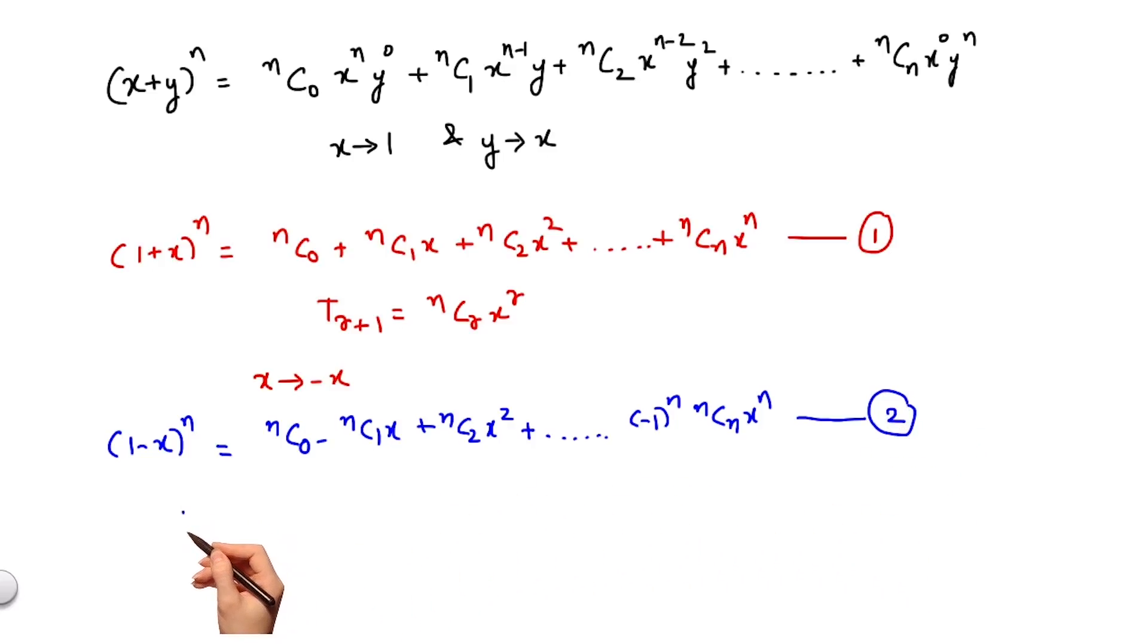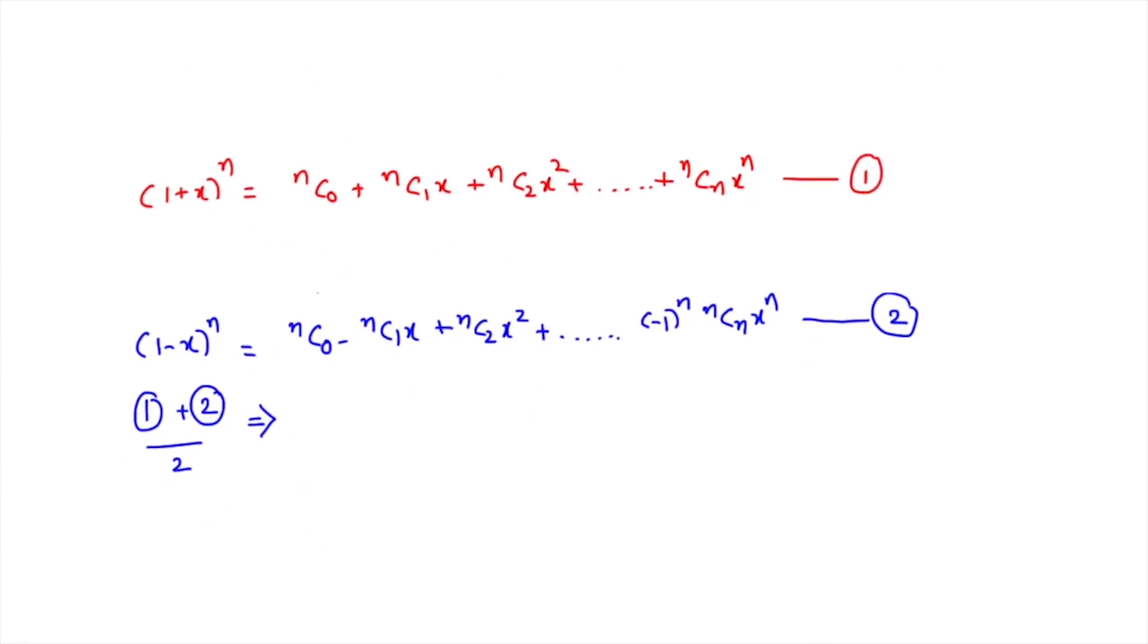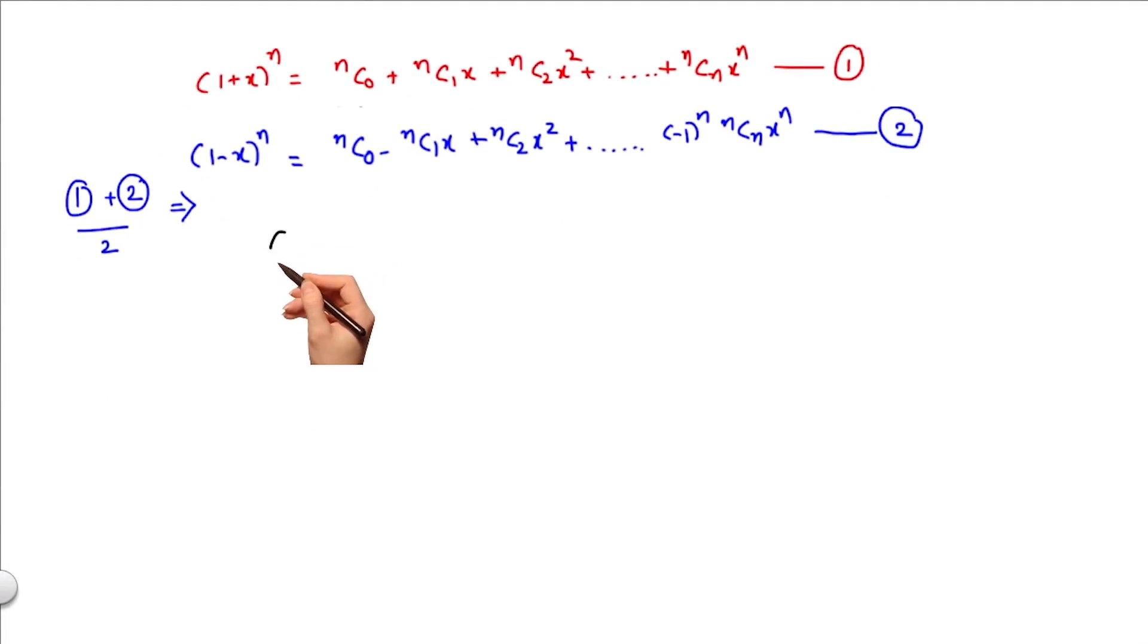Now if I were to add equations 1 and 2 and divide by 2, I would get [(1+x)^n + (1-x)^n]/2 on the left hand side. On the right hand side, I would be able to cancel out the terms containing odd binomial coefficients like nC1·x or nC3·x³, and I would be left with nC0 + nC2·x² + nC4·x⁴ and so on.